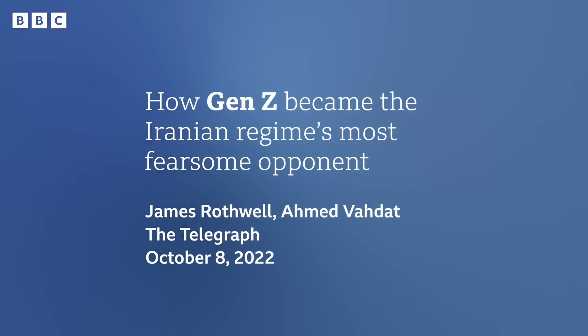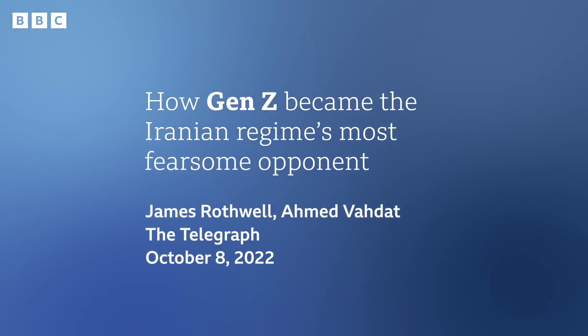Our next headline is from The Telegraph: 'How Gen Z, or Gen Z as they say in the US, became the Iranian regime's most fearsome opponent.' The headline is saying that Gen Z is a fearsome — meaning frightening — opponent of the regime. An opponent is someone or a group against another group. The headline says this group, Gen Z, is the most frightening opposition for the government in Iran. Gen Z is short for Generation Z, and it refers to people who were born in the late 1990s and early 2000s. In Iran, a lot of the protesters are school age or university age, and that is the age group known as Gen Z.